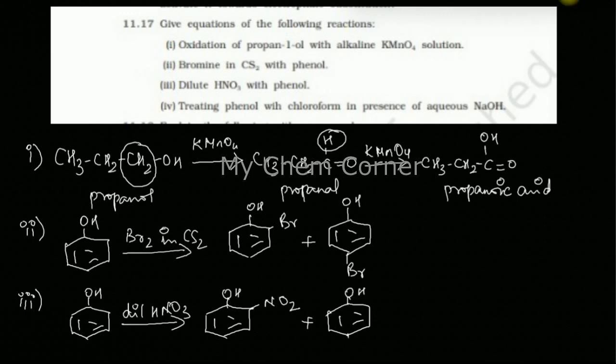Both these reactions are under dilute conditions, therefore you will get two separate products. The last one is treating phenol with chloroform in the presence of aqueous NaOH. It's basically a Reimer-Tiemann reaction. For this you will have phenol.